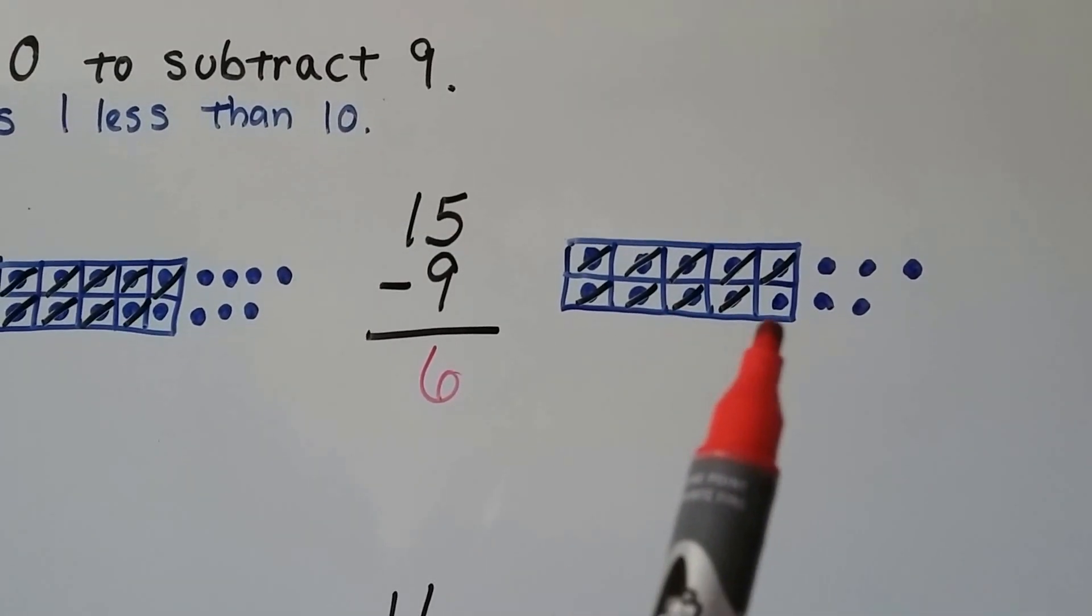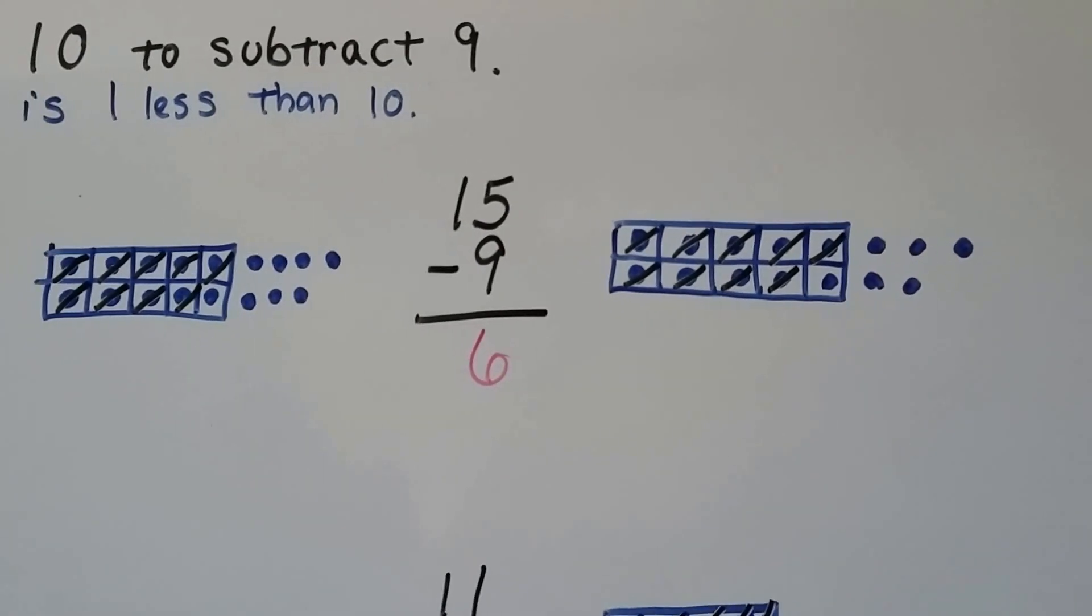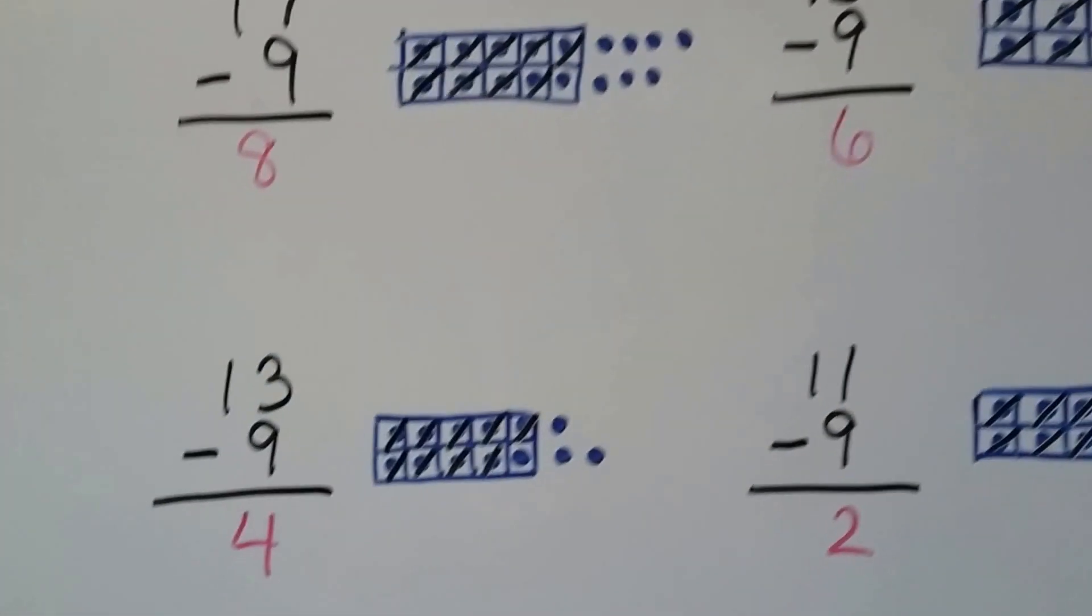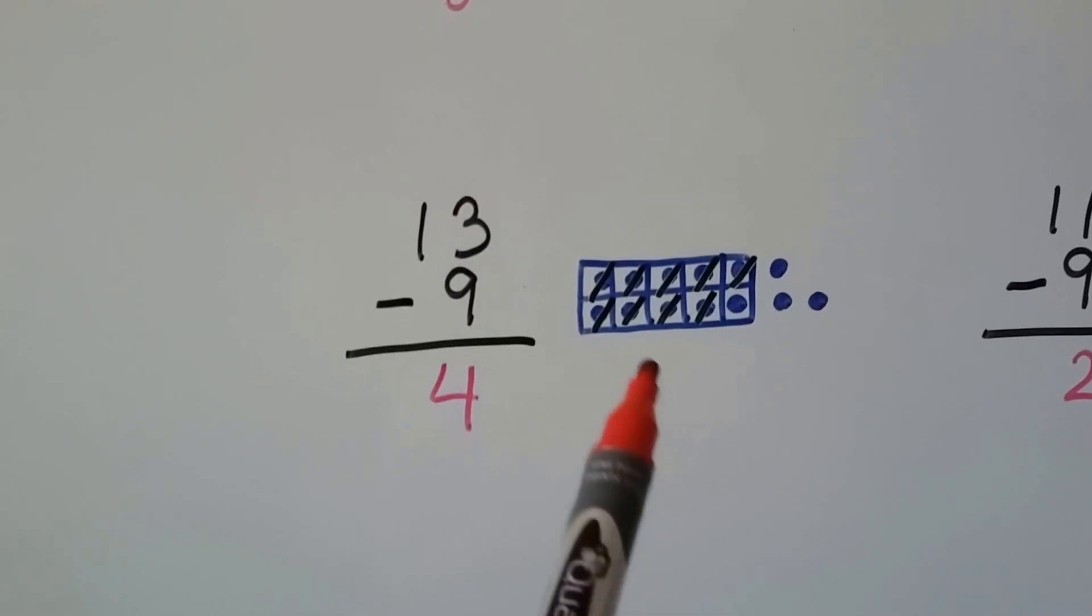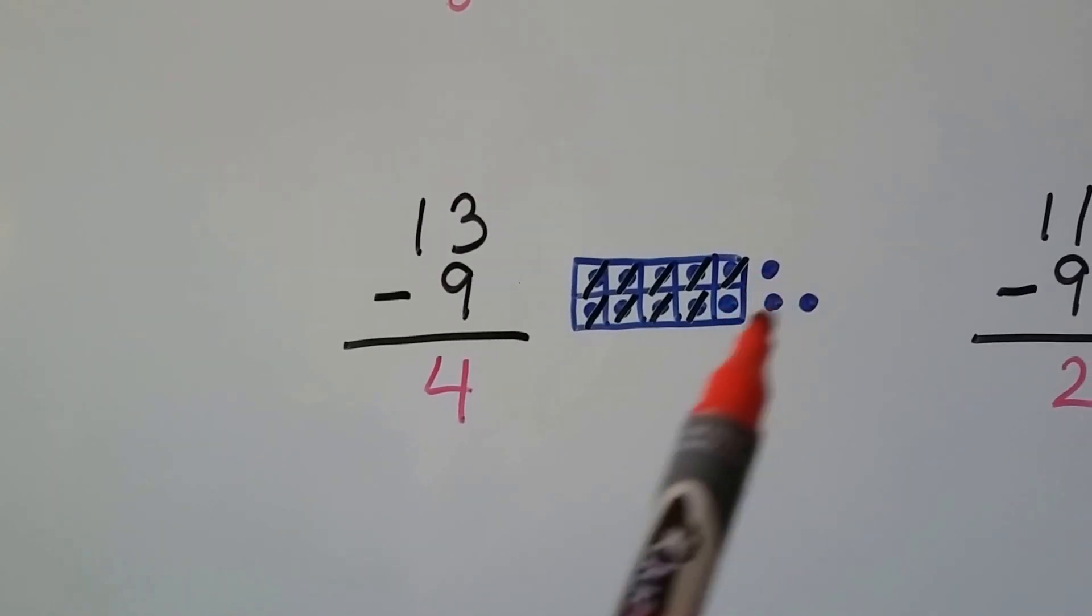We cross off 9 of them and we've got 1, 2, 3, 4, 5, 6 left. 13 minus 9, we have 13 dots. We crossed off 9 of them and we've got 1 and 3 left, that's 4.